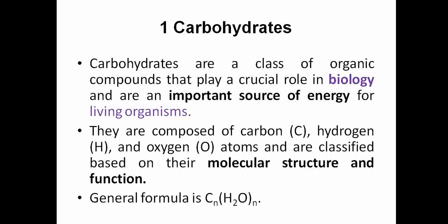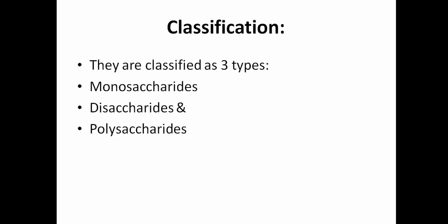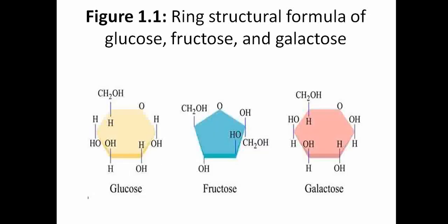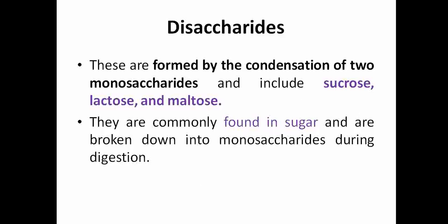Carbohydrates are organic compounds that play a crucial role in biology, serving as an important source of energy for living organisms. They contain carbon, hydrogen, and oxygen atoms and can be classified based on their molecular structure and function. The general formula is CnH2On. There are three classifications: monosaccharides, disaccharides, and polysaccharides. Monosaccharides are the simplest form — soluble in water and a primary source of energy — with examples including glucose, fructose, and galactose.